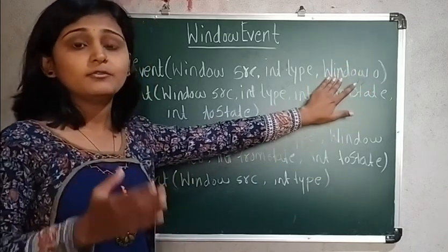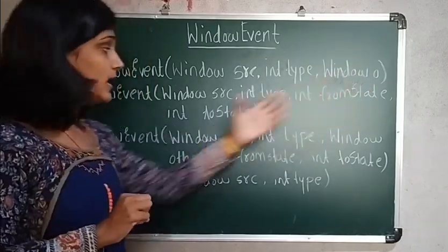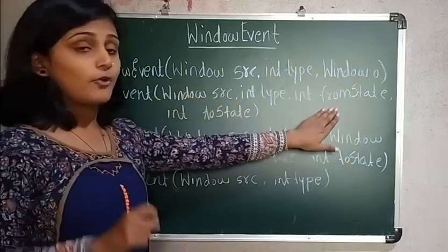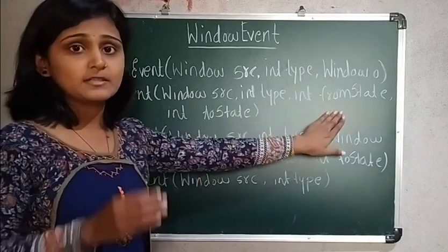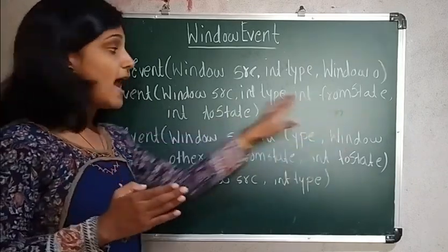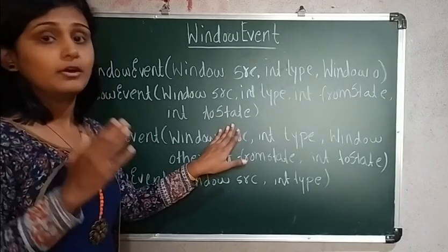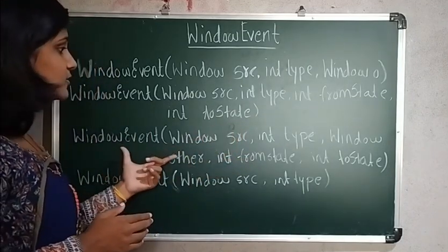Here again, two parameters are there - from state and to state. From state means to specify the previous state of a window, and to state means the new changed state of a window. So regarding this, it is the WindowEvent.